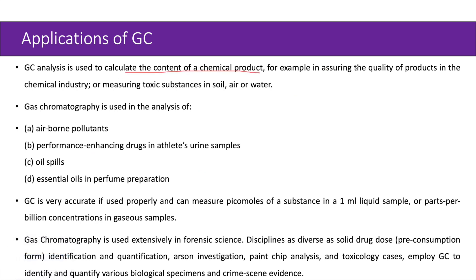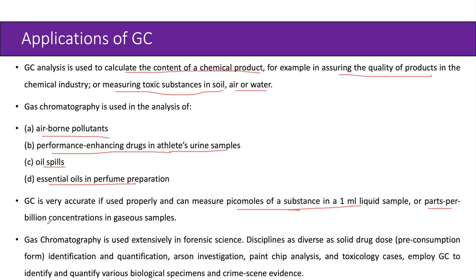The applications of gas chromatography include calculating the content of a chemical product, assuring quality in the chemical industry, and measuring toxic substances in soil, air, or water. GC is used in the analysis of airborne pollutants, performance enhancing drugs in athletes' urine samples, oil spills, and essential oils in perfume preparation. GC can measure picomoles of a substance in a one milliliter liquid sample or parts per billion concentrations in gaseous samples. It is used extensively in forensic sciences including drug dose identification, arson investigation, paint chip analysis, and toxicology cases.